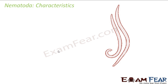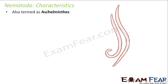What are we going to talk about in Nematoda? These are also worm-like creatures. They are also termed as Aschelminthes — rhyming with Platyhelminthes. The term nematode means thread, so these are worms which have thread-like structures. They are very thin worms.